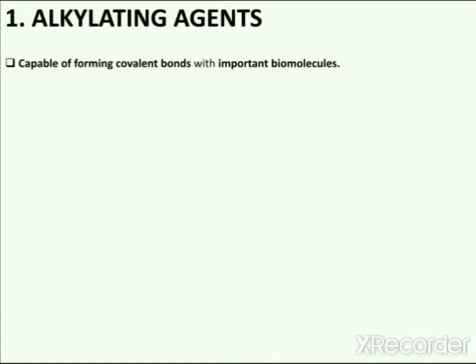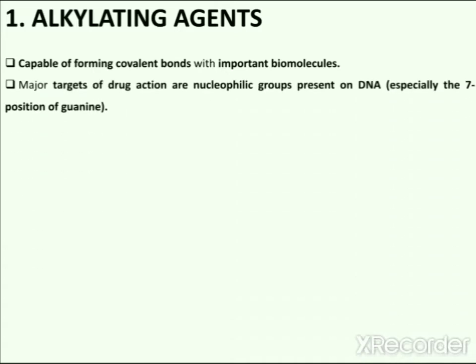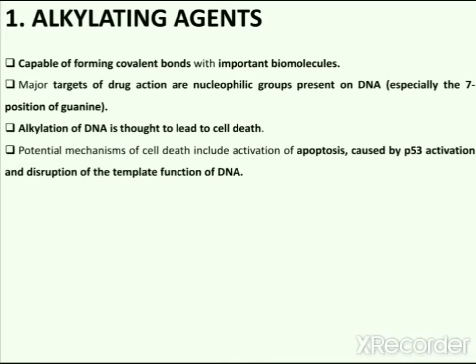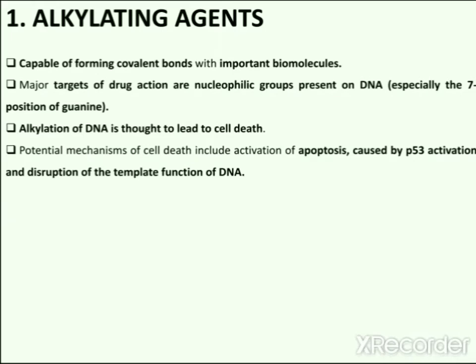The first category is alkylating agents. Alkylating agents are a class of drugs that are capable of forming covalent bonds with important biomolecules. The major targets of drug action are nucleophilic groups present on DNA, especially the 7th position of guanine. Alkylation of DNA is thought to lead to cell death.